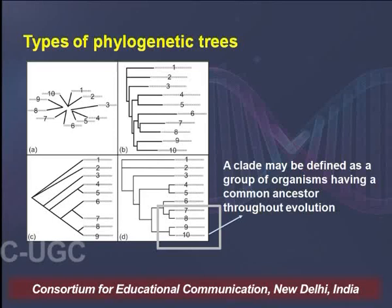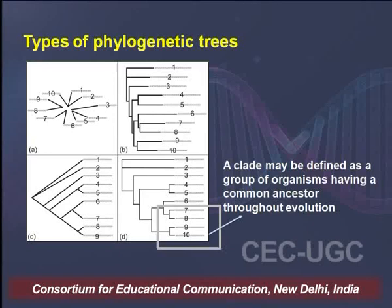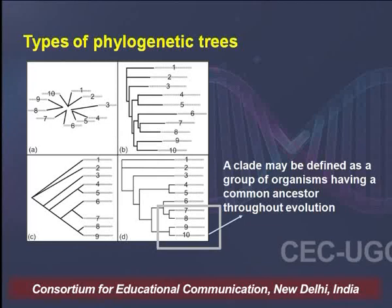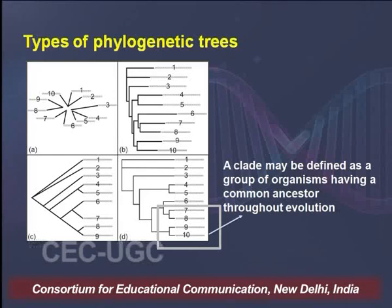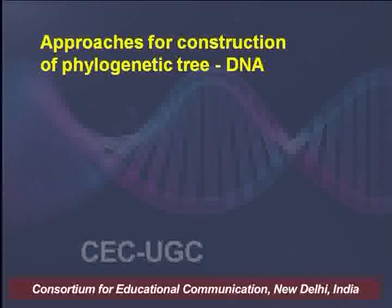Another term to mention here is a clade. A clade can be defined as a group of organisms having a common ancestor throughout evolution — it basically makes a bunch of organisms which share a common ancestor. Recognizing a clade is quite important when talking about phylogenetic trees. This is again showing four types of phylogenetic trees drawn with the software TreeViewX.